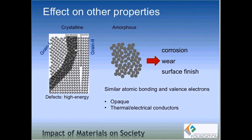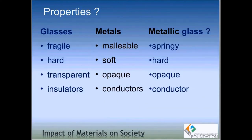So now we can fill the third column that was left vacant. We know how metallic glasses behave: they are very springy with very high elastic strain energy, they are extremely hard like glass, they are opaque like crystalline metals, and they are good electrical and thermal conductors. That's the reason we call them a bit of metal and glass — they have some properties similar to crystalline metals and other properties similar to glasses, stemming from their amorphous atomic arrangement.